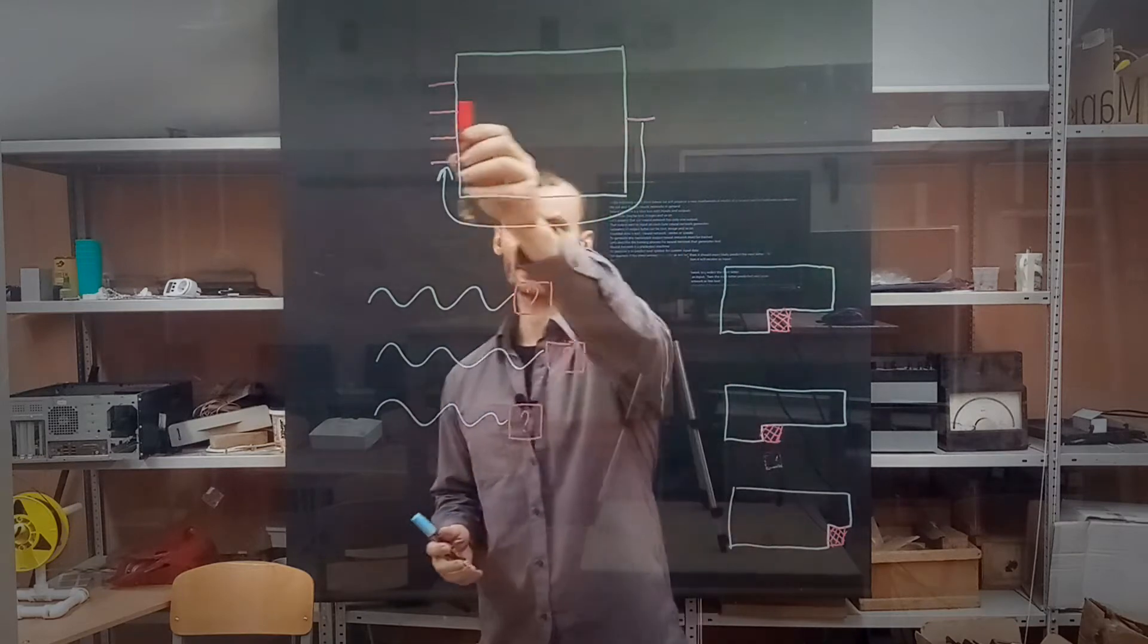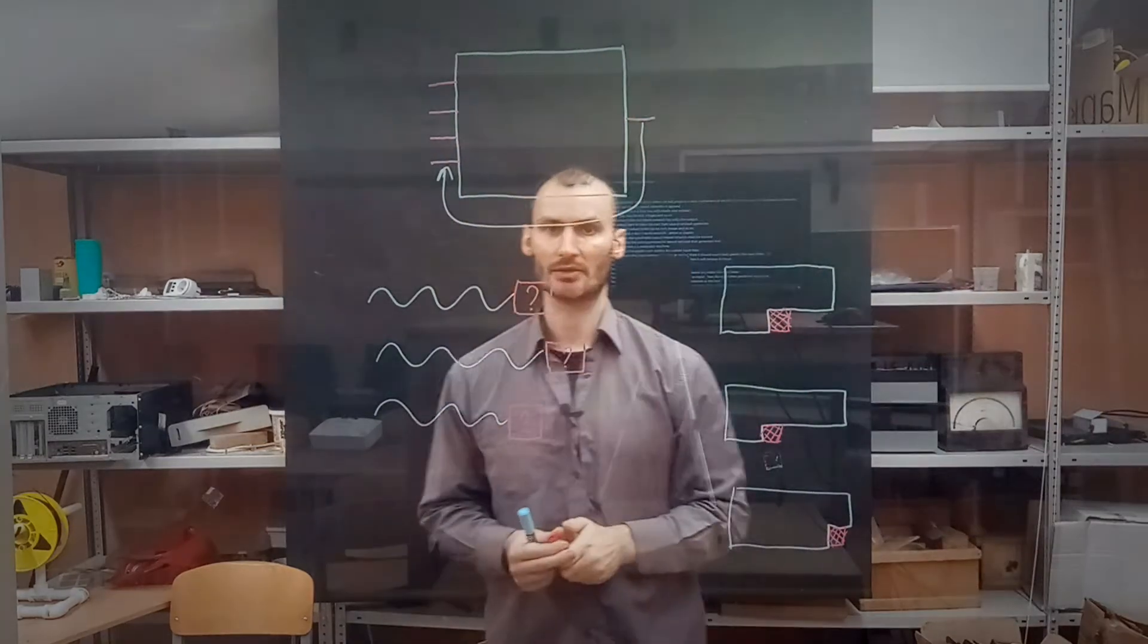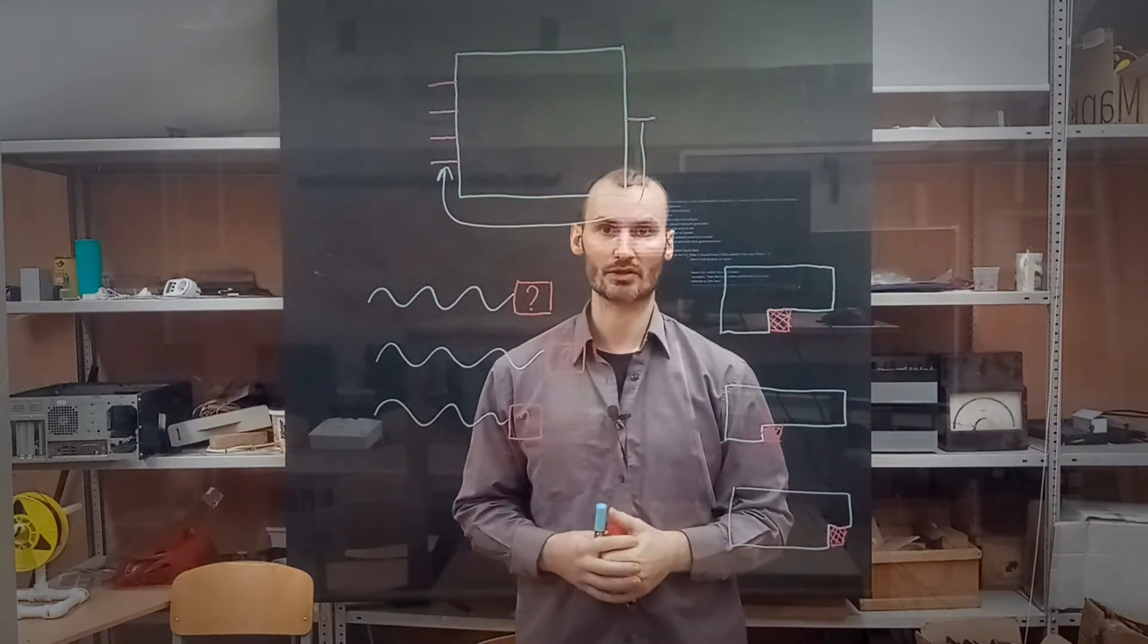Neural network is a blue box with inputs and outputs. Input data may be text, images and so on.